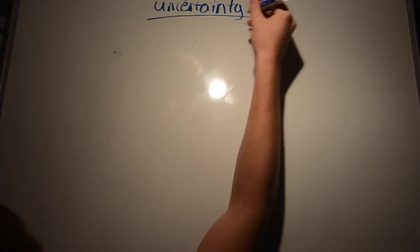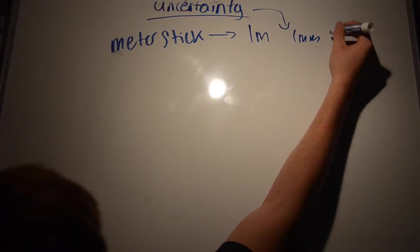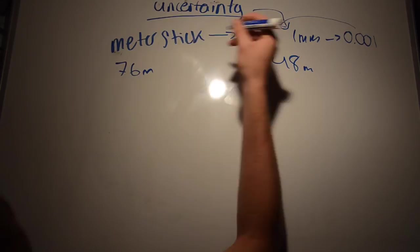Alright, and finally, percent uncertainty. Percent uncertainty can best be explained by taking a measurement like a meter stick. The uncertainty is going to be 1 millimeter, or 0.001 of 1 meter.